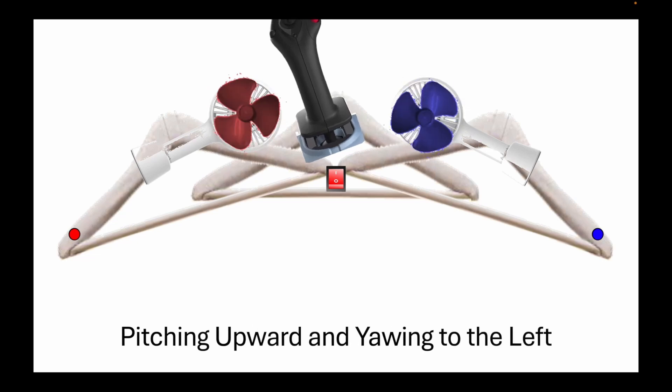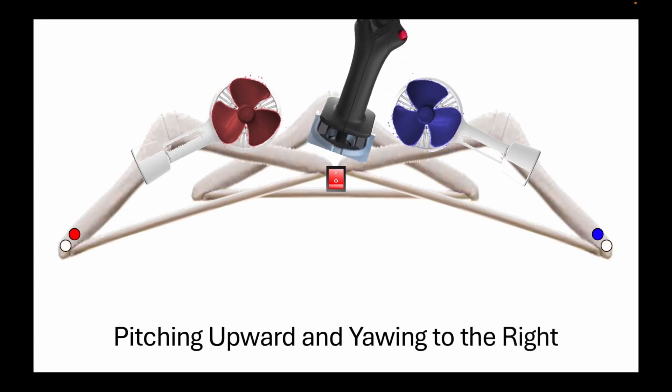Conversely, when you pitch downward, both propellers spin slower. But for now, we're still pitching upward and yawing to the left. The right propeller spins faster than the left one. But when you yaw to the right, it's the left propeller that spins faster than the right one.